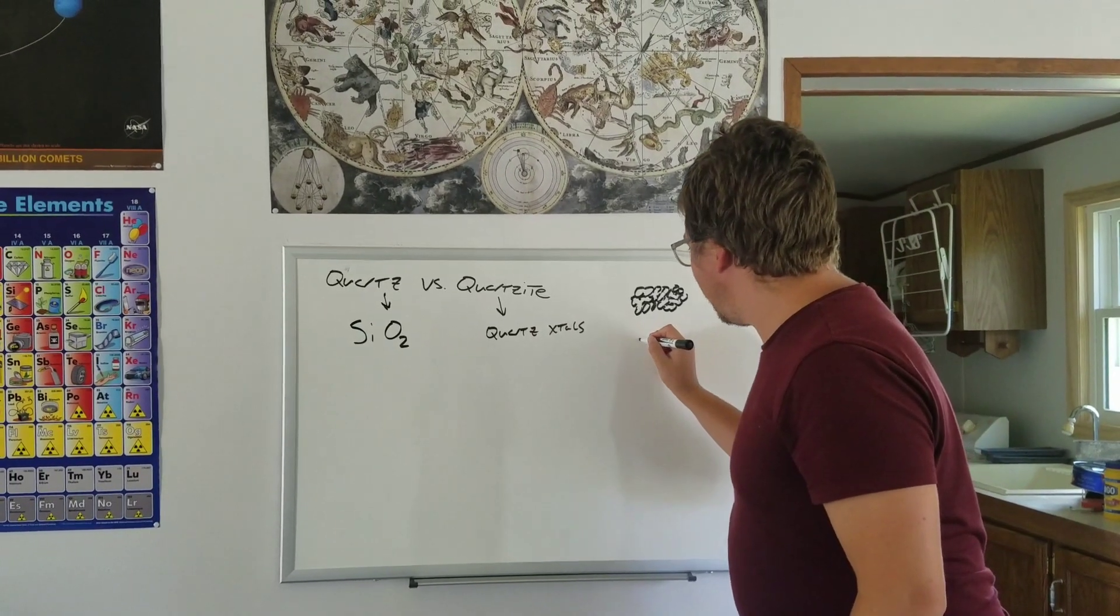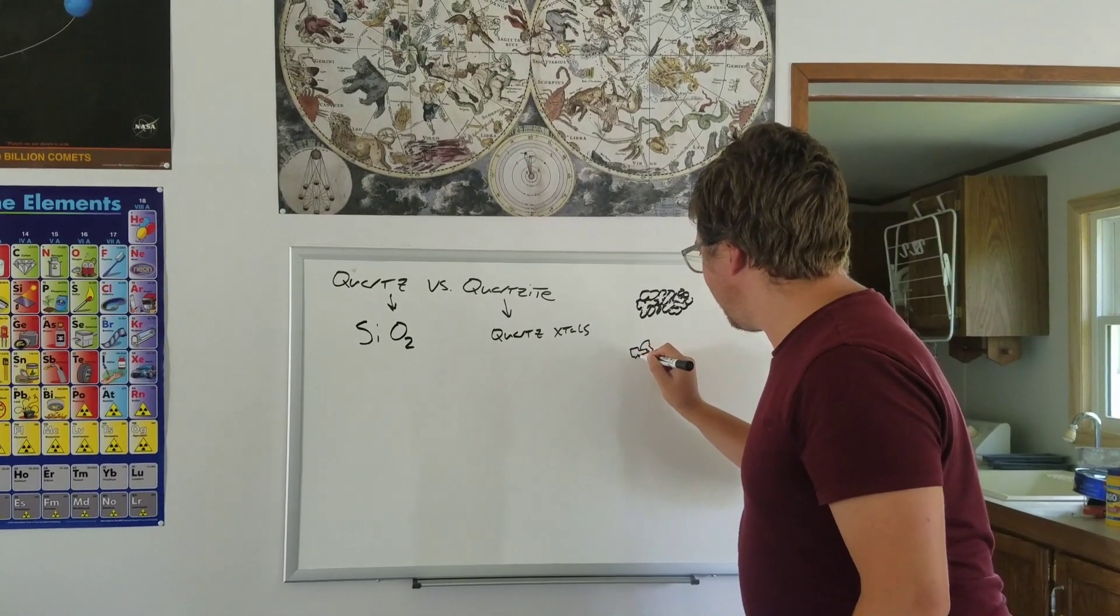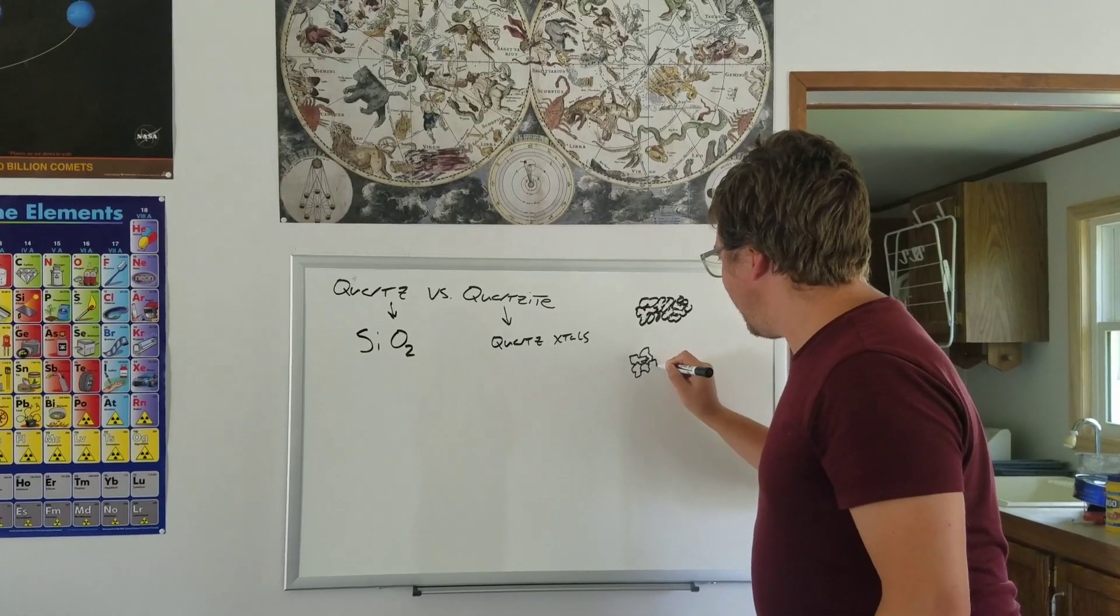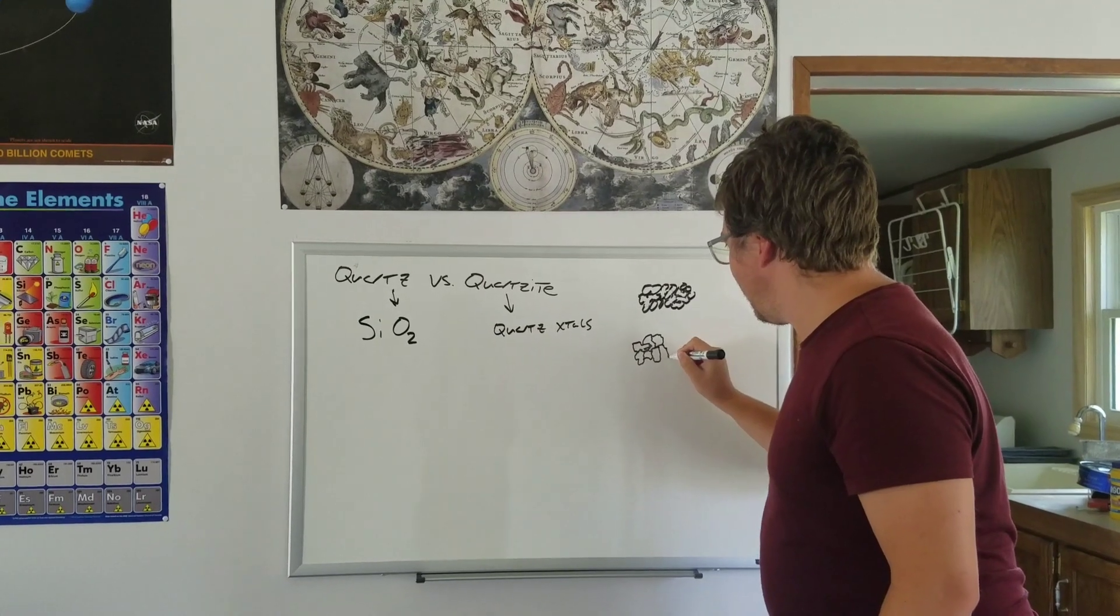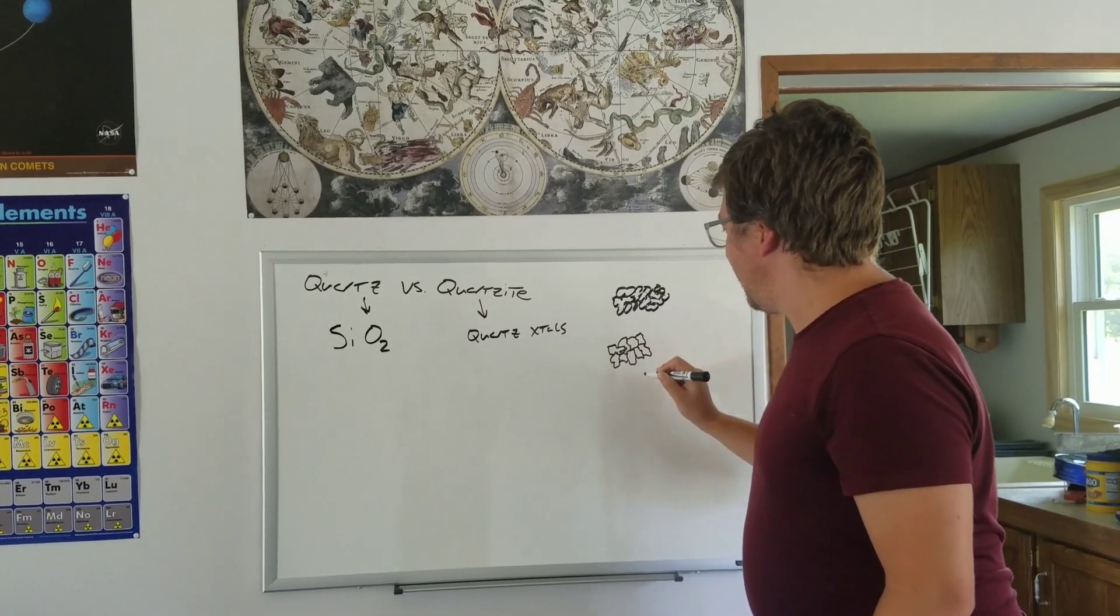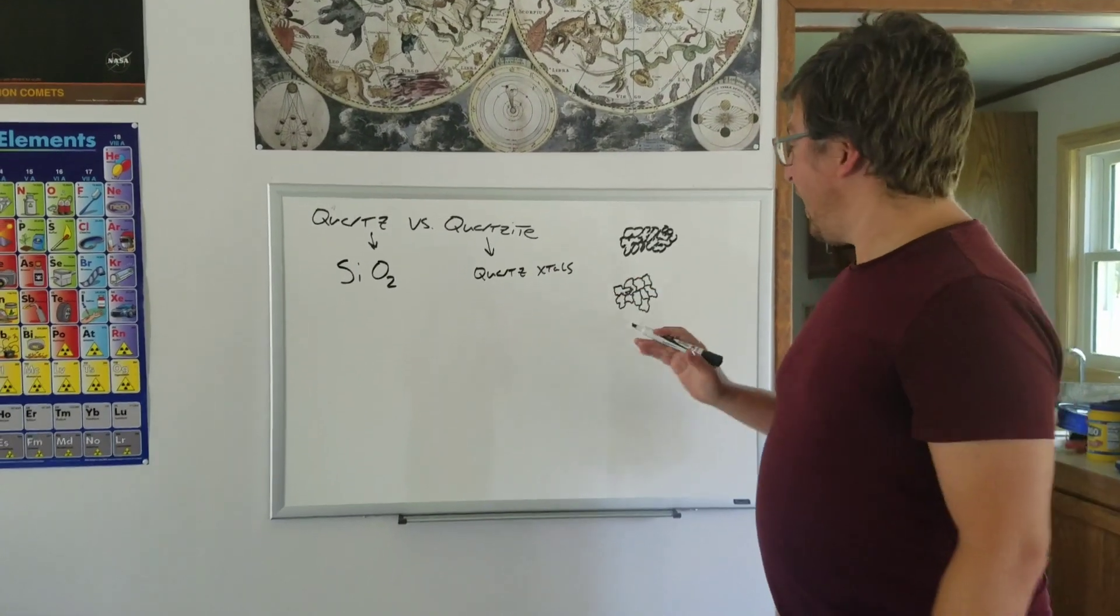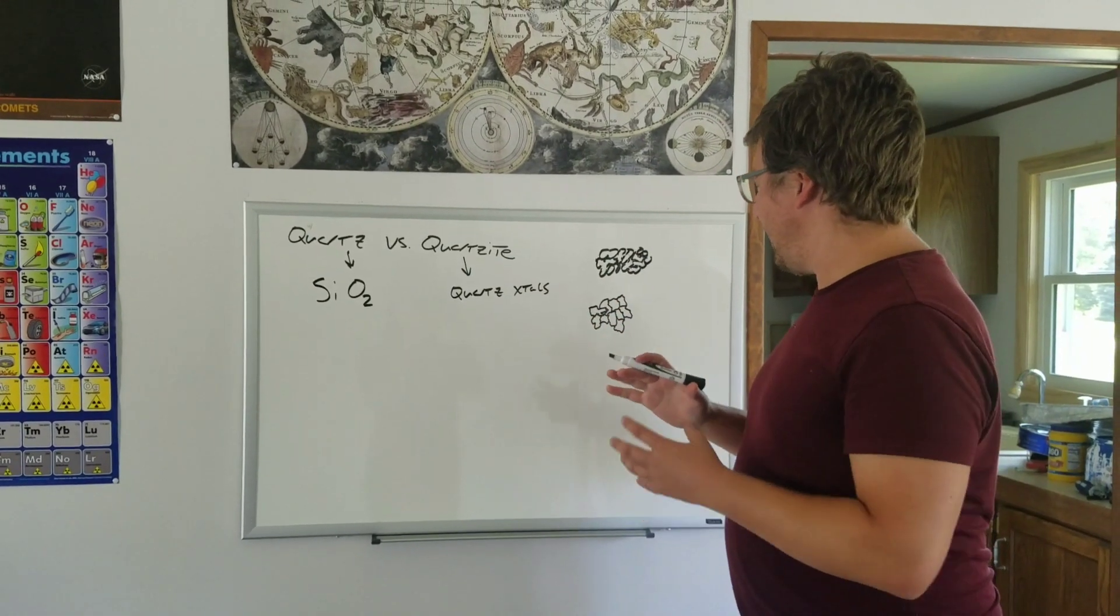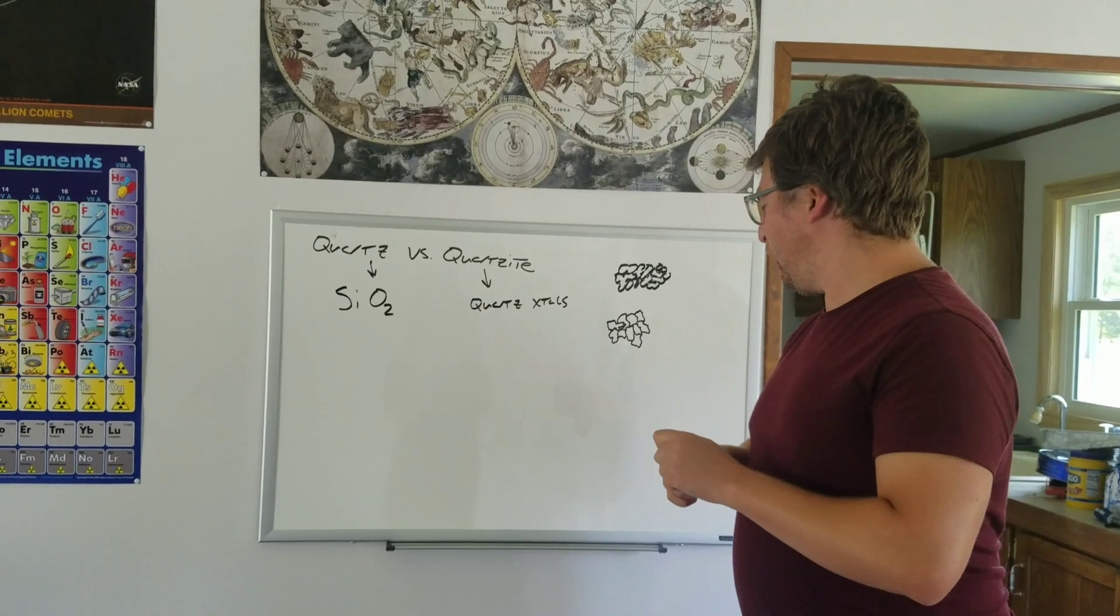And so what you kind of end up with when it's all said and done is a rock that when you zoom in on it, it's made out of quartz grains. But those quartz grains can kind of look all wobbly like this. And you can still kind of see that this rock that's mostly made out of quartz is composed of these quartz grains that used to be sand grains. However, those boundaries have fused and they've grown together, they've intergrown. And you've got a quartzite there.